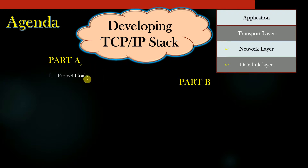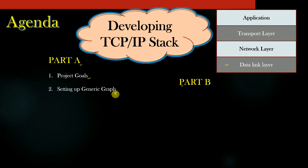In Part A we will define the project goals, the prerequisites, and the takeaways — what you are going to learn. We will write a library to set up a generic graph. This library actually implements the graph data structure, which contains nodes and edges connecting nodes. You can use this library in the future to solve or implement any graph-based algorithms or problems.